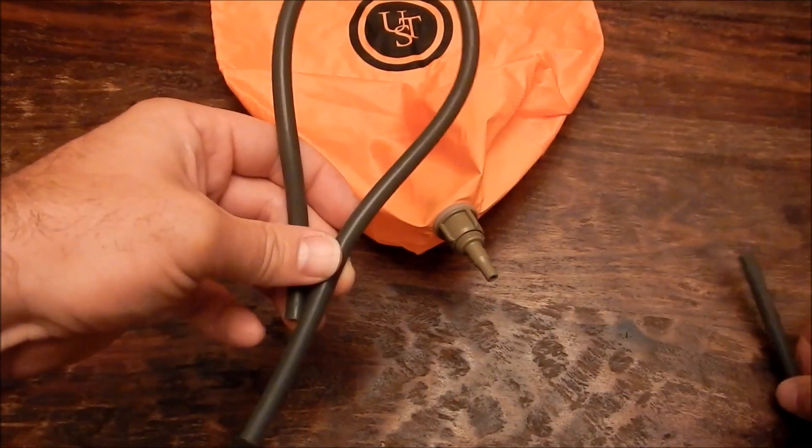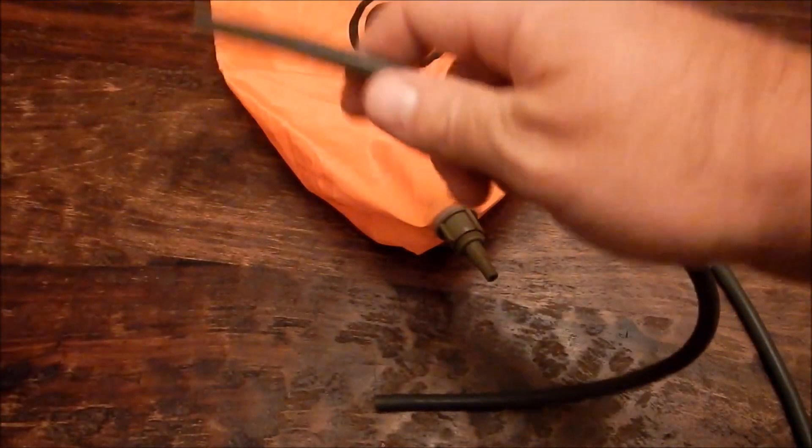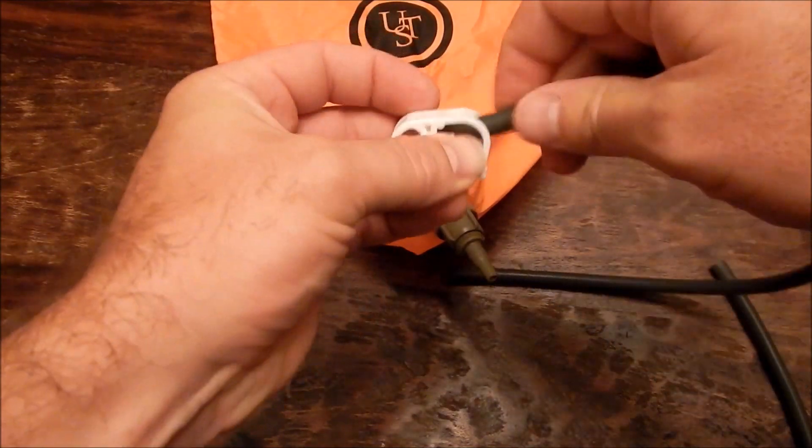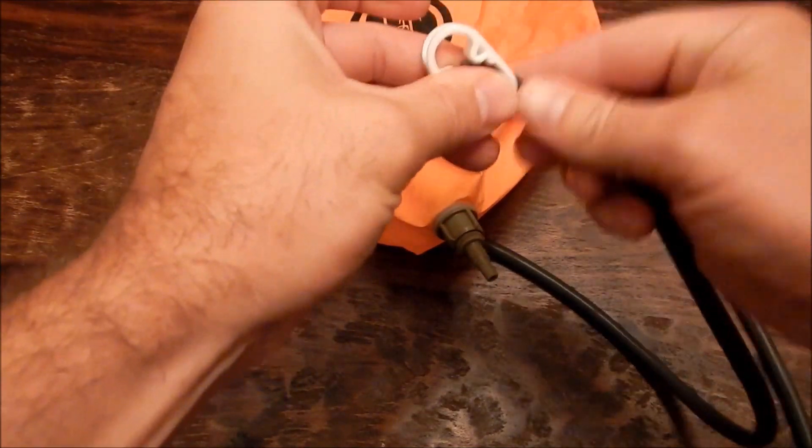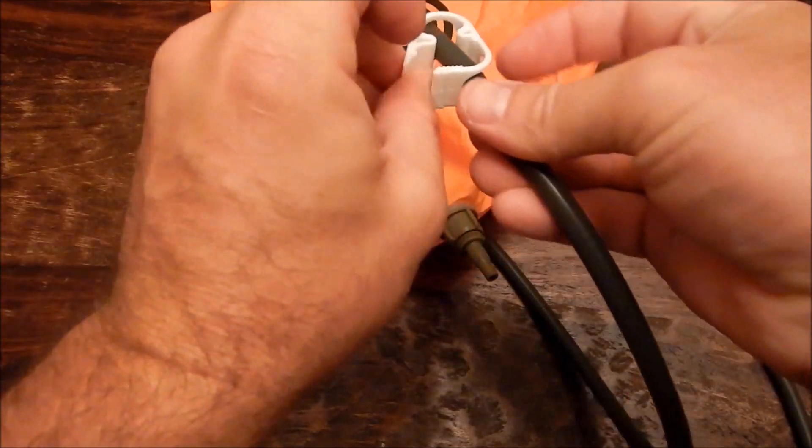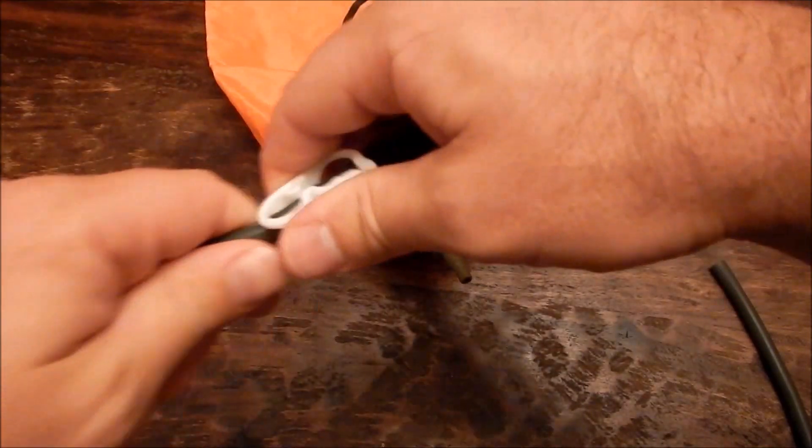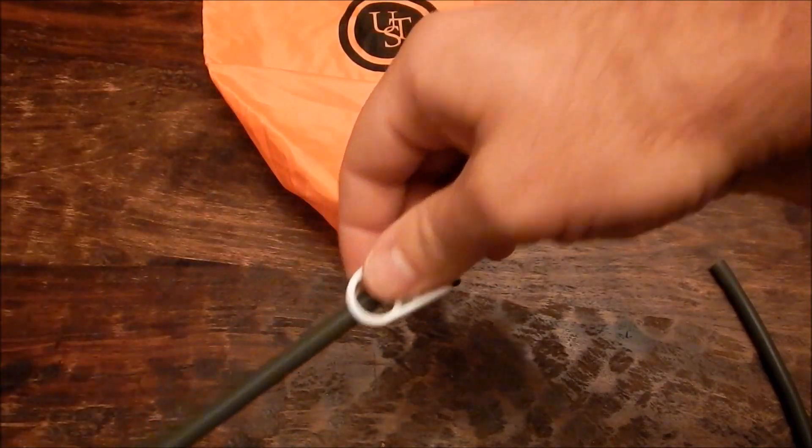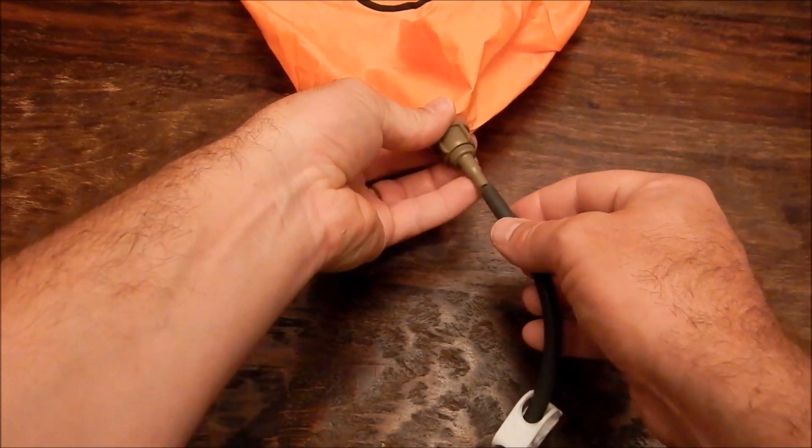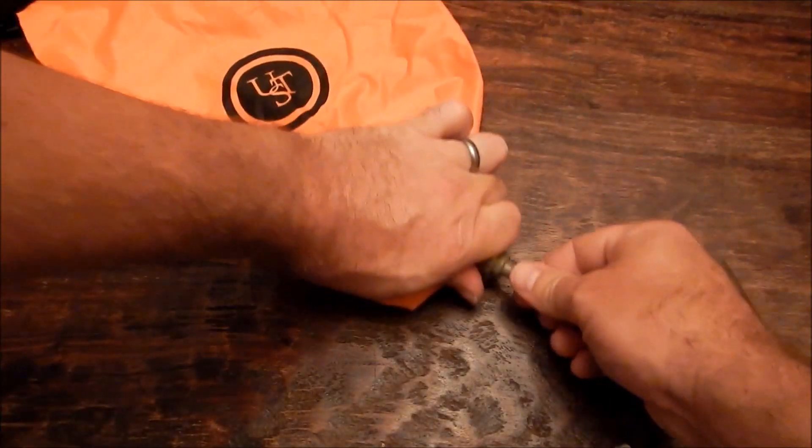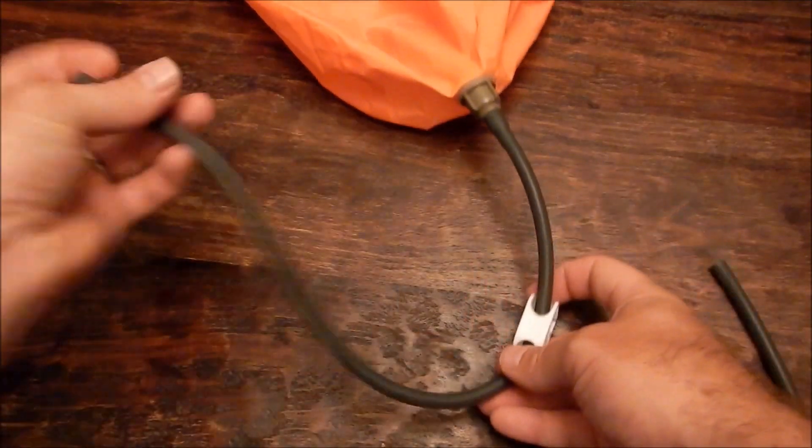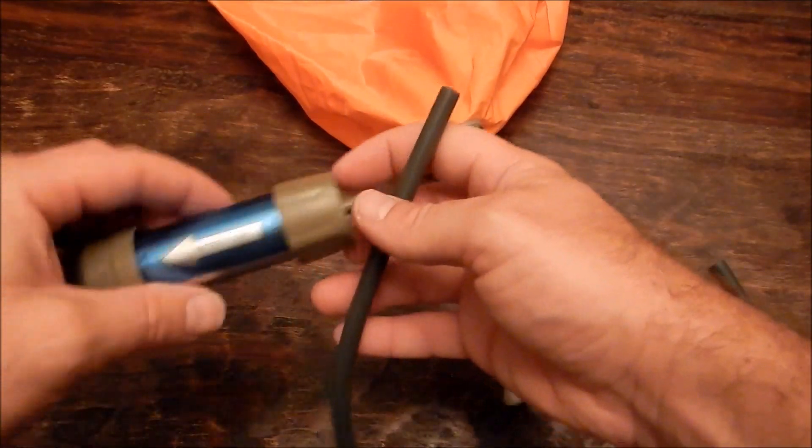Next thing you need to do is take the hose clamp and feed that through the hose clamp and feed it into the water column. And then you're going to connect that piece to the bulkhead fitting all the way up.